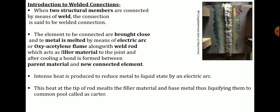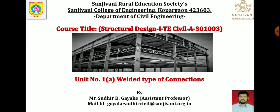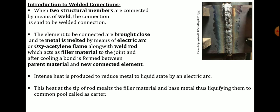Two materials are connected with the help of an electrical rod and electric current, which melts the parent material as well as new material, and the electric rod acts as filler material to form a complete joint. Intense heat is produced to reduce the metal into liquid state by an electrical arc. The heat at the tip of the rod melts the filler material and the base metal, liquefying them into a common pool called a crater. This particular tapered line is called the crater where welding is done.